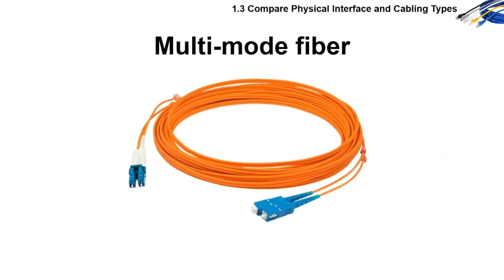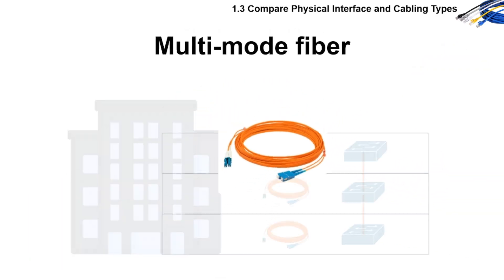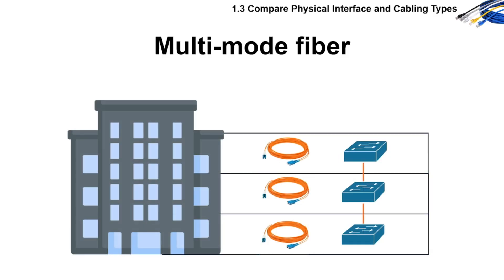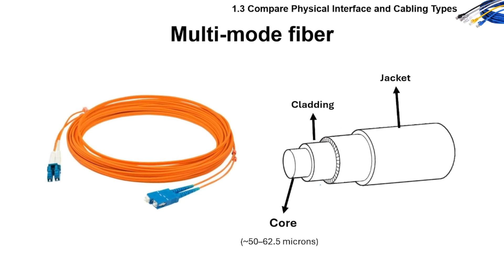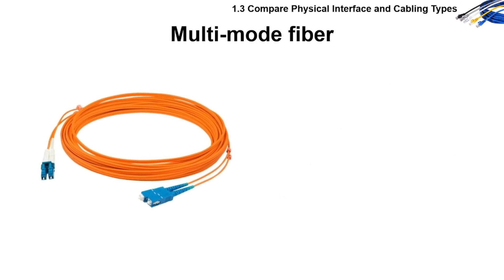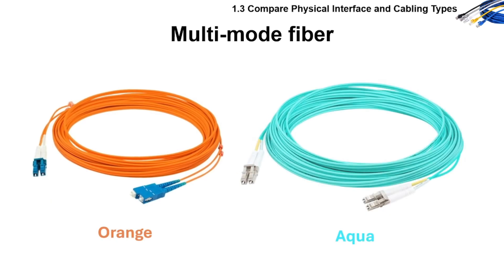There's also multi-mode fiber. It is used for shorter distances, still fast, and cheaper than single-mode. It uses LED light and has a larger core compared to single-mode fiber. The color code is orange or aqua jacket.